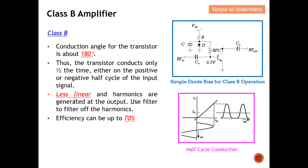Class B is less linear compared to Class A, and it also has a lot of harmonics. Typically these harmonics are generated at the output, and in order to remove them we need to use a filter. The efficiency of a Class B amplifier can be as good as 70%, which is much better compared to Class A.